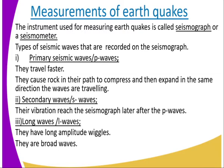The types of seismic waves that are recorded on the seismograph are: one, we have the primary seismic waves, which are the P waves; two, secondary waves, which are the S waves; and the third one is the long waves, which are the L waves.